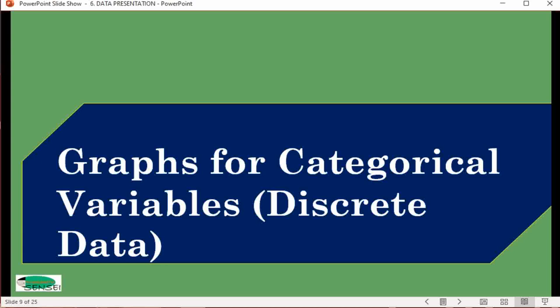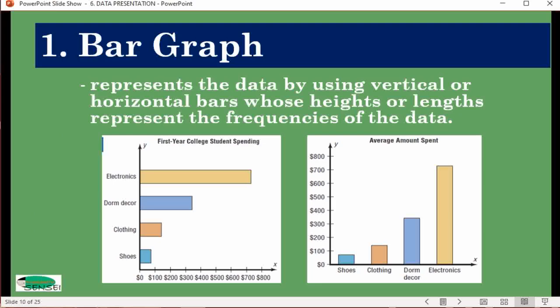We also have graphs for categorical variables, which are often discrete data. The first one is the well-known bar graph. Like the histogram, it also uses vertical bars, and sometimes horizontal bars, representing the frequencies of the data. Notice the horizontal bar graph and vertical bar graph representations. Frequencies are usually indicated by the y-axis for vertical graphs and the x-axis for horizontal graphs.